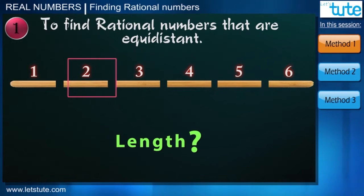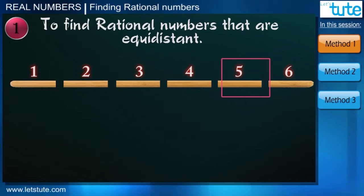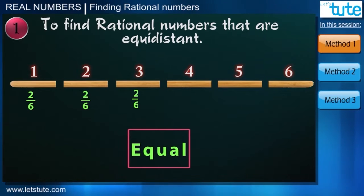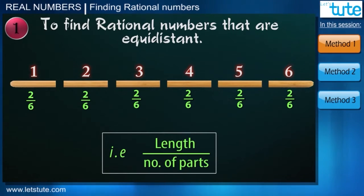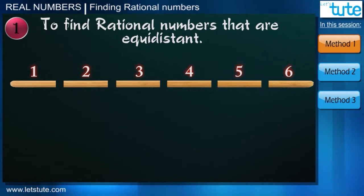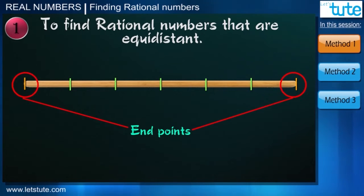But what will be the length of each part? Each part will be equal and it will be 2 upon 6. That is the length upon the number of parts, right? So you see, even if we wanted 6 parts, we have marked at only 5 places because the two were the end points.